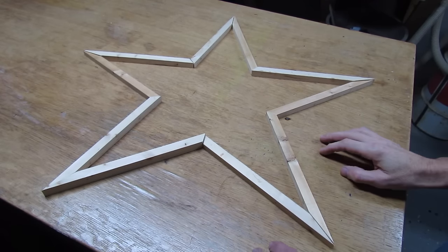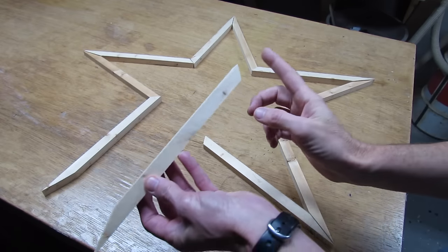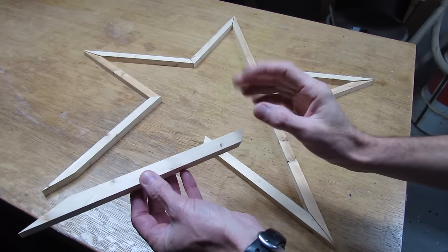So you can see once you have the pieces together it makes a perfect star. The key here is to make sure that you get these angles absolutely precise and it will go together perfectly.